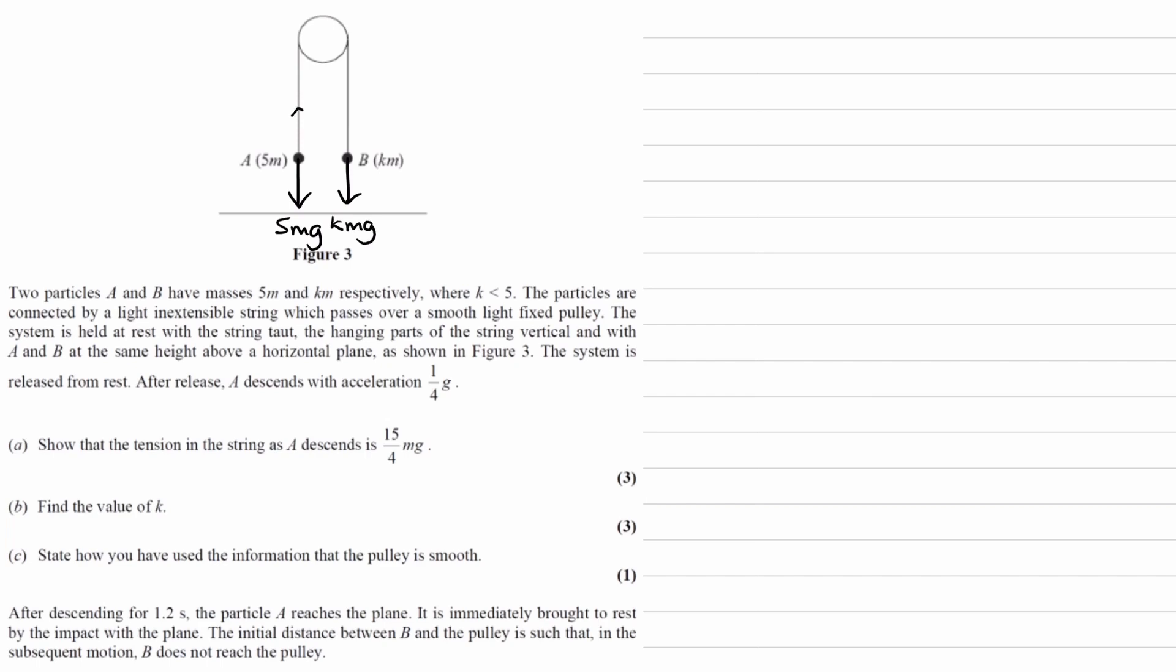I'll draw the tensions as well, T and T. We're told our modeling assumptions: it's connected by a light and extensible string which passes over a smooth, light-fixed pulley. It's held at rest, the string is vertical, and A and B are the same height above the ground.